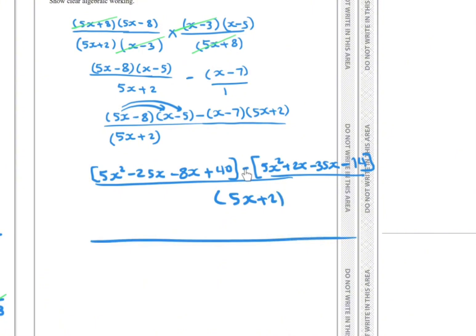Now this negative will change all the signs in this bracket. So you have 5x² - 25x - 8x + 40 - 5x² - 2x + 35x + 14 over the same denominator.